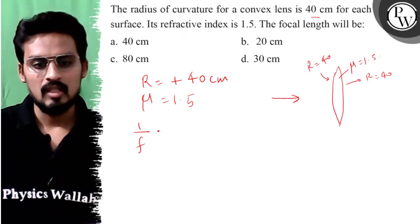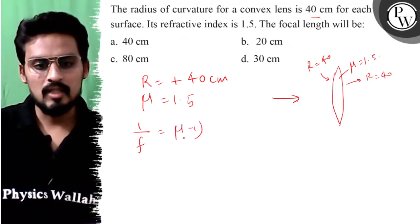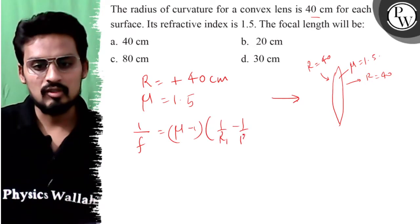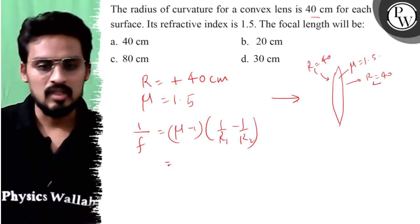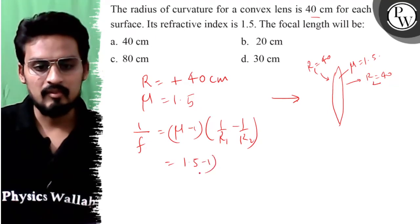To by lens maker formula, 1 by f is equal to mu minus 1, 1 by r1 minus 1 by r2. Yeh ho jayega mera r1, yeh ho jayega r2. To chalo solve karte hai.